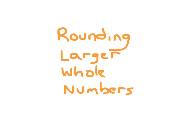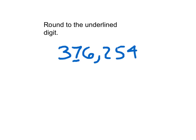Let's work on rounding some larger whole numbers. Here we're asked to round to the underlined digit. The underlined digit is the 7 here. We can't get confused in our rounding wrap because we had an underlined digit in the rounding wrap, but this one already has an underlined digit. It's asking us to round to that 10,000th place.